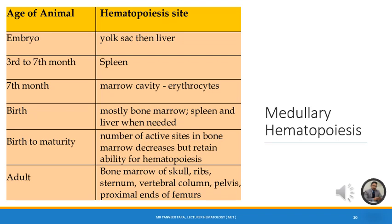Extramedullary hematopoiesis refers to hematopoiesis occurring outside of the bone marrow environment — in the liver and spleen. It can be physiological or pathological. Physiologically it occurs before birth in fetal life, but when it becomes pathological it indicates some disease or problem in the human body.